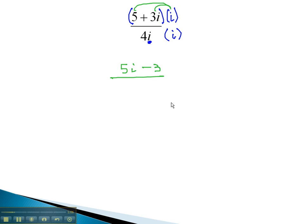Similarly, in the denominator, i times i is going to equal negative 1, times 4 is negative 4. And now, there's no longer a square root or an i in the denominator of this expression.